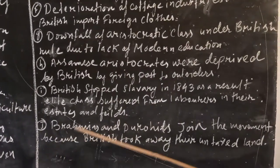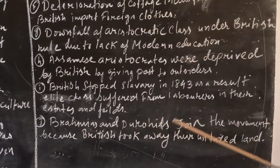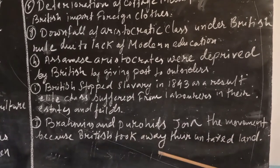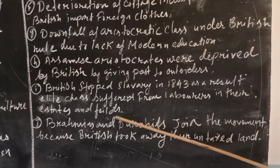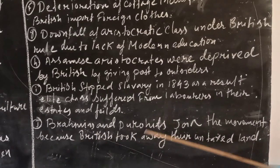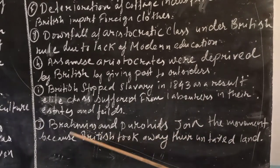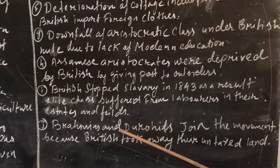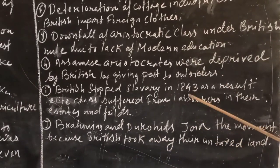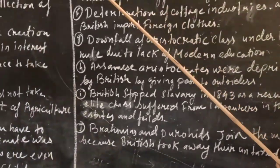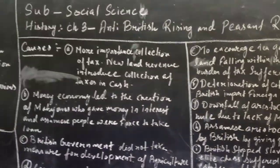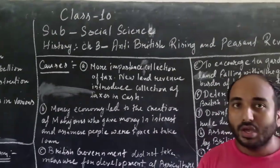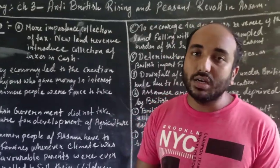Lastly, Brahmins and Purohits joined the movement because the British took away their untaxed land — land which had been granted to them by the kings — and gave it to others. So they also joined the movement. These are the reasons for the anti-British uprising. The next topic will be discussed in the next class.